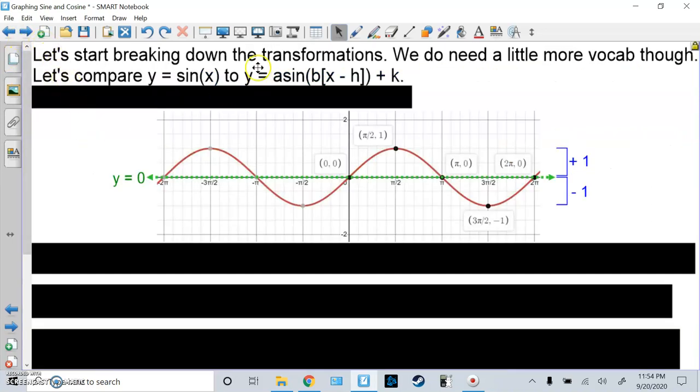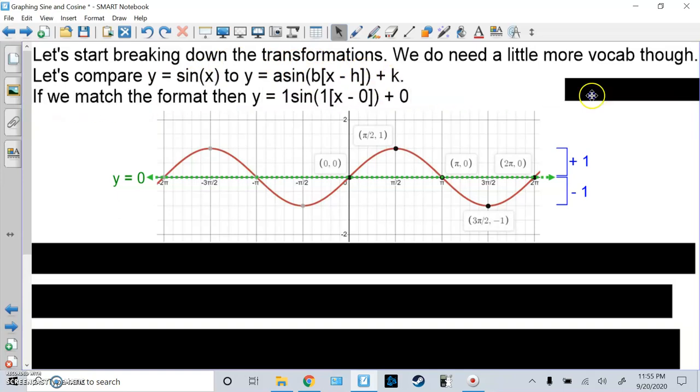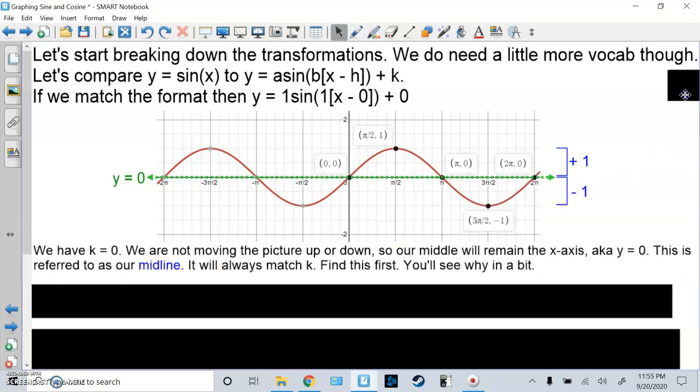Let's try breaking down transformations. We do need a little more vocabulary. So, let's go back and compare the original parent, y equals sine of x, to y equals a times sine of b of x minus h plus k. If I match the format, notice that a is 1, b is 1, h is 0, k is 0. The first thing you should do is actually look at k.